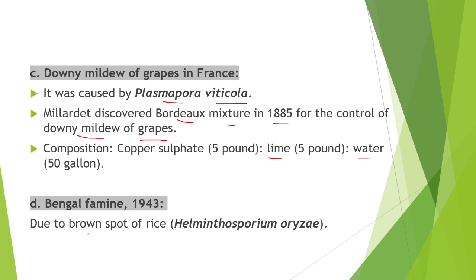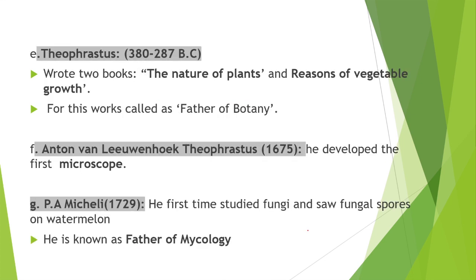Next is Bengal famine, which occurred in 1943 due to the brown spot of rice, i.e., Helminthosporium oryzae. Theophrastus wrote two books: The Nature of Plants and Reasons of Vegetable Growth. He is also known as the father of botany.